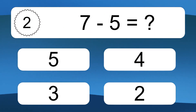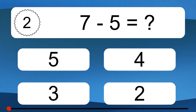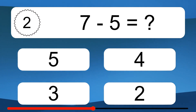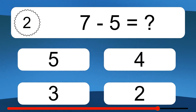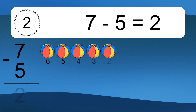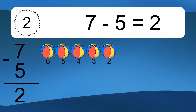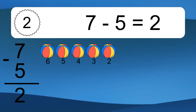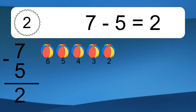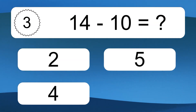7 minus 5 equals what? 7 minus 5 equals 2. Let's count it: 6, 5, 4, 3, 2. 14 minus 10 equals what?